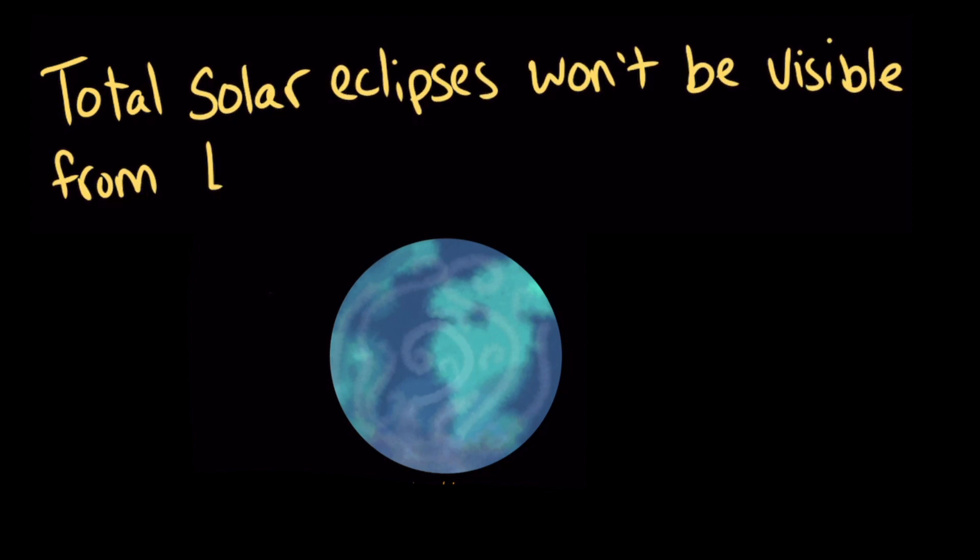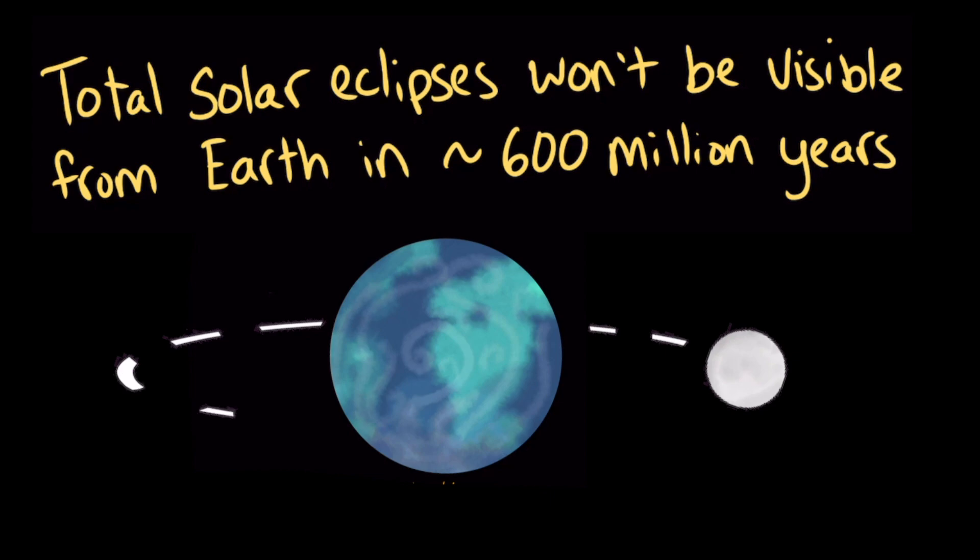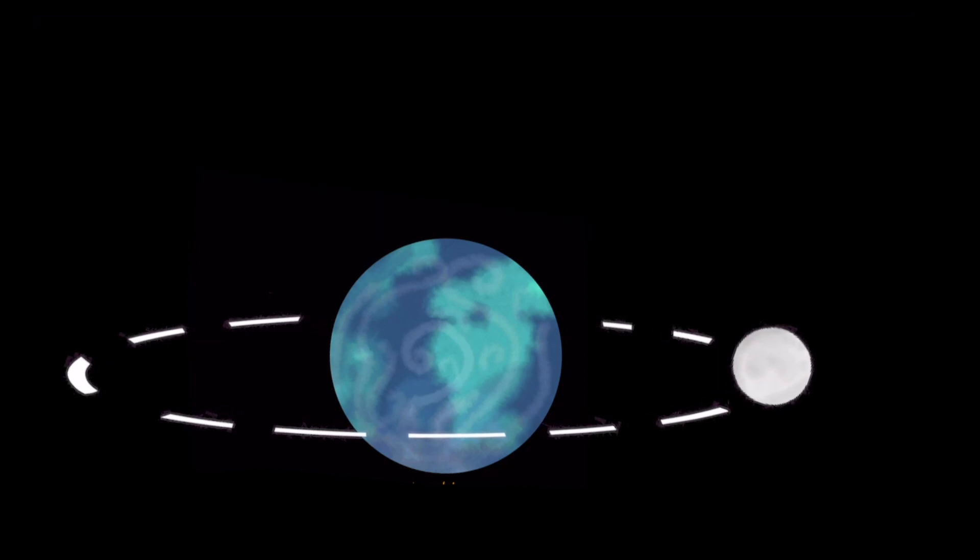Total solar eclipses won't be visible from Earth in about 600 million years. This is because the moon's orbit is gradually getting bigger, with the moon moving about 4 centimeters away from Earth each year. So one day, the moon will appear to be too small in the sky to entirely block the sun's light.